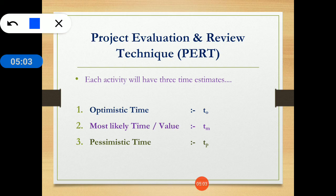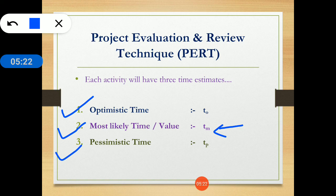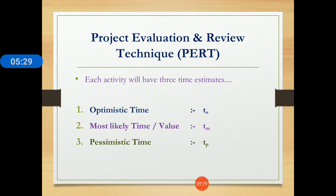In the Project Evaluation and Review Technique, three times are given in every problem: optimistic time TO, most likely time TM, and pessimistic time TP. In the PERT method there are always these three time estimates given in the example.